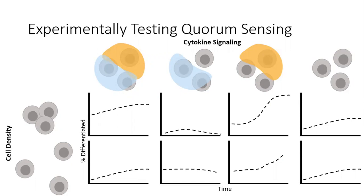To detect quorum sensing experimentally, I aimed to culture T helper cells under a variety of different cell densities and with different types of cytokine signaling permitted to hopefully observe different patterns of differentiation.